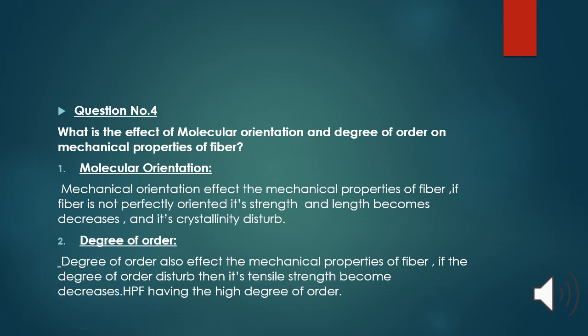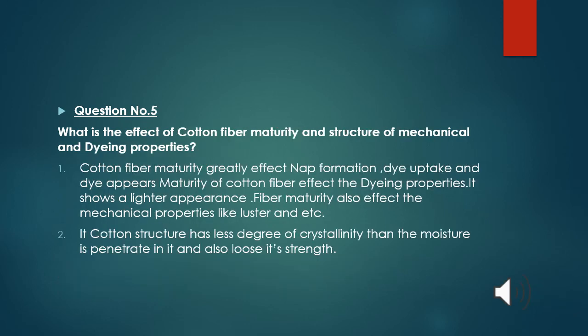Question number five: What is the effect of cotton fiber maturity and structure on mechanical and dyeing properties? Cotton fiber maturity greatly affects nap formation, dye uptake and dye appearance. Maturity of cotton fiber affects the dyeing properties. It shows a lighter appearance. Fiber maturity also affects the mechanical properties like luster. If cotton structure has less degree of crystallinity, then moisture penetrates in it and also loses its strength. Thank you.